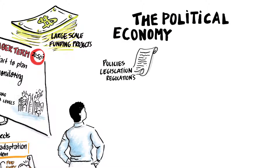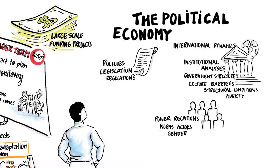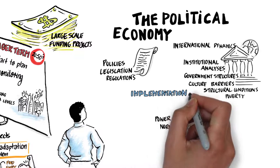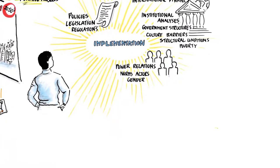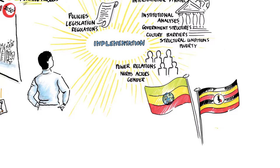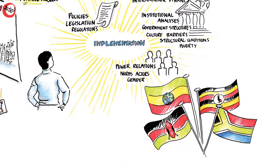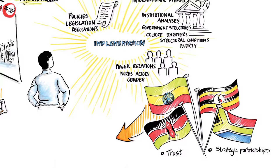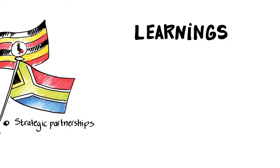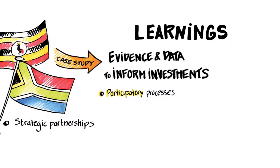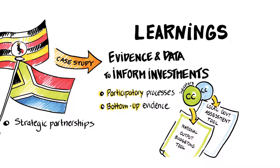How are policies and regulations, as well as government and other institutions, all likely to affect the implementation of a particular adaptation project? Case studies from Uganda, Ethiopia, Kenya and South Africa show that building trusted relationships and strategic partnerships are key to influencing policymakers around adaptation. A Uganda case study showed that using participatory processes is a powerful means of gathering evidence from the ground up in order to influence national adaptation policies and investments.